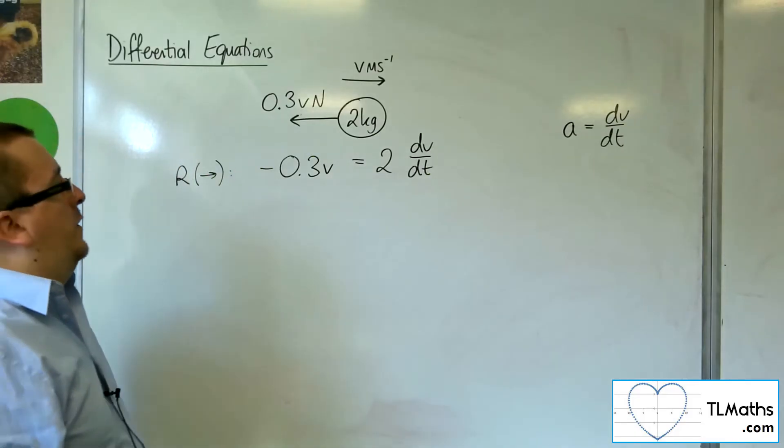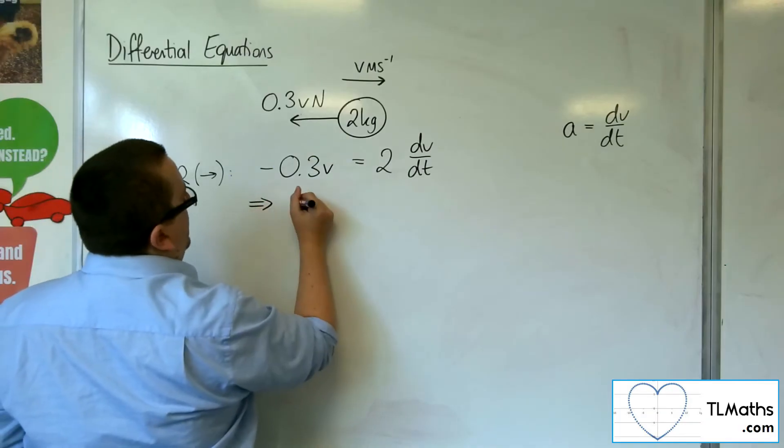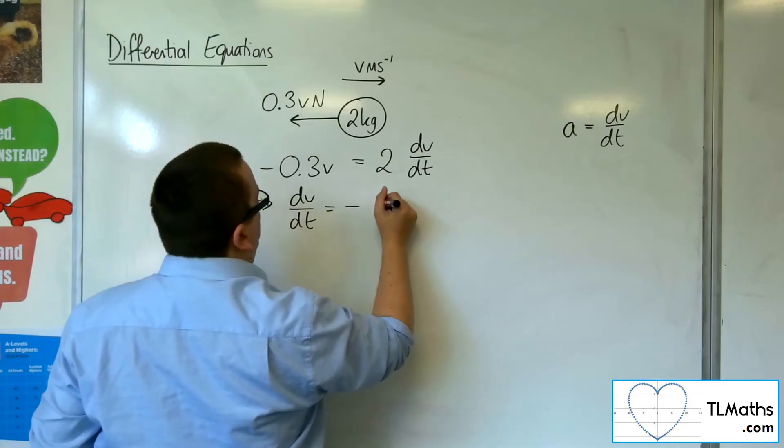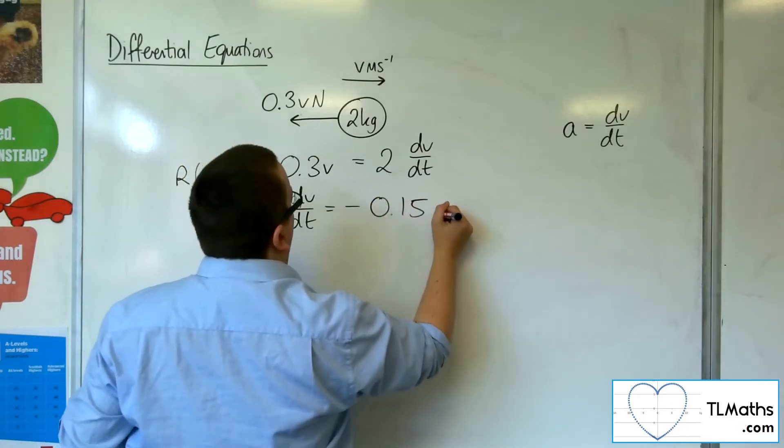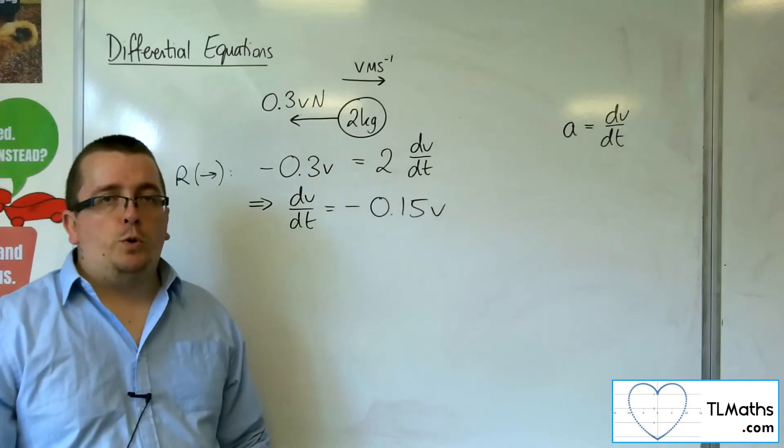OK, so if I divide both sides now by 2, I get that, well, I'll rewrite it this way. So dv by dt is minus 0.15v. OK, so here is my differential equation.